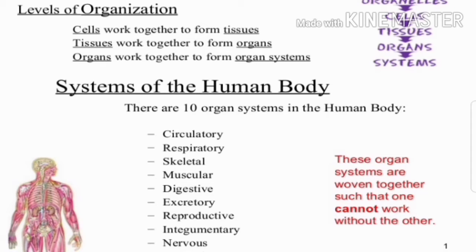Organ systems form when organs work together. Organs form when tissues work together. And tissues form when cells work together. These are the main organ systems in our body.